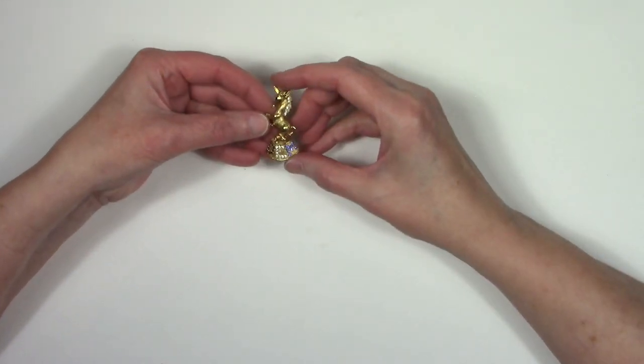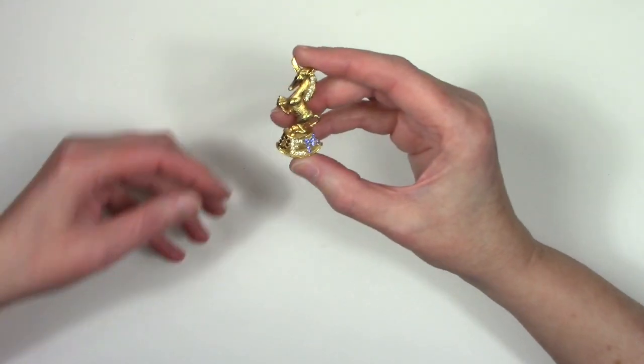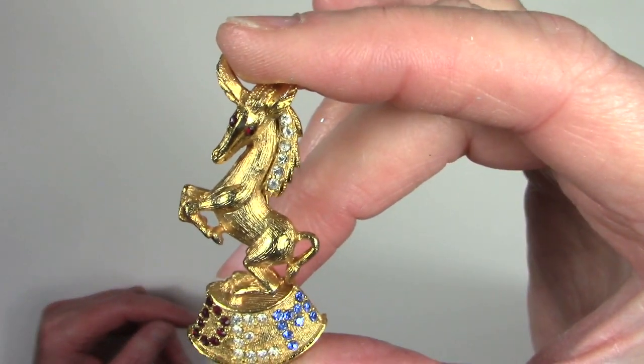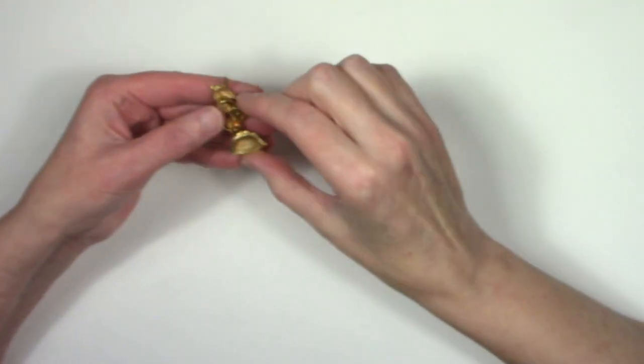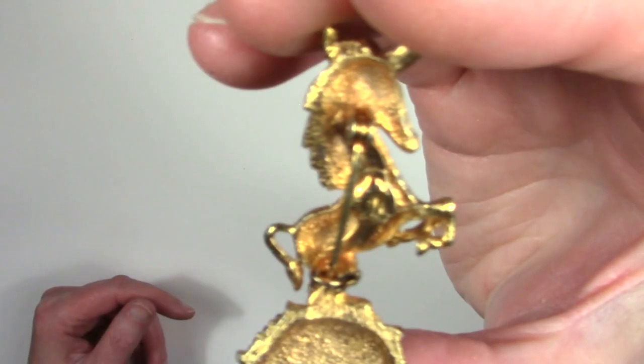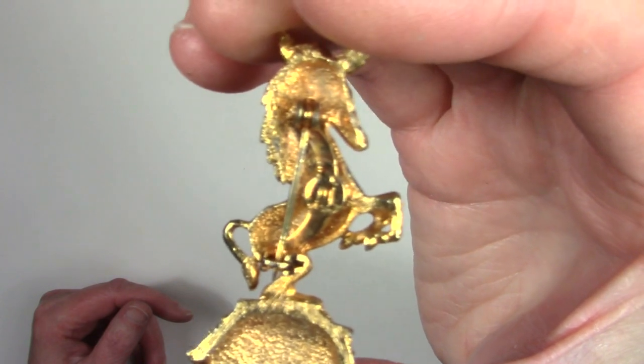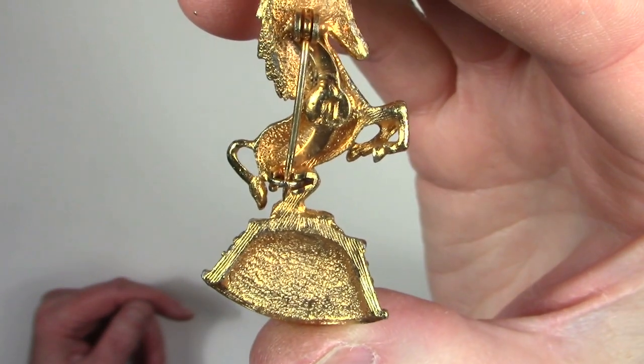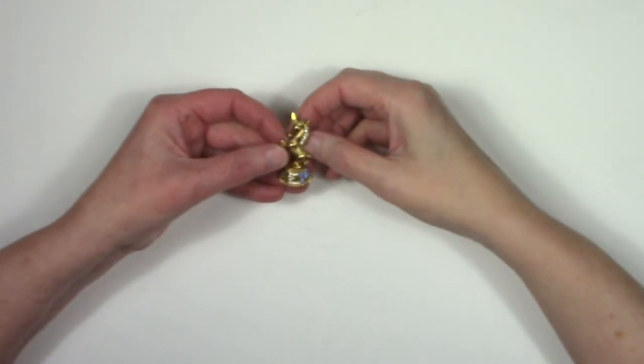Oh, fun. Okay, so we have a Democratic donkey pin. It's definitely vintage. We have the pin bar extending from the end of the clasp. It's a fun piece. All right, cool.